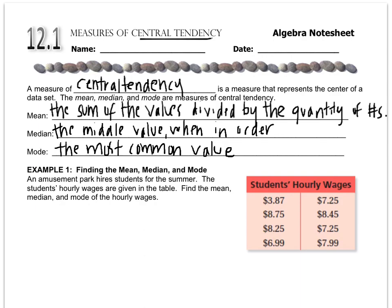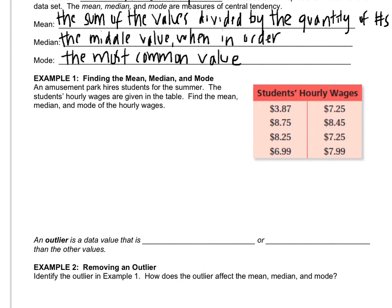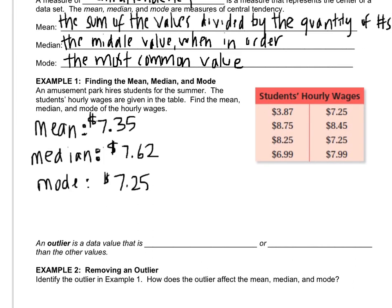So, I'd like you right now, pause the video, and example one, find me the mean, median, and mode of the hourly wages. The median is $7.62. That's not on the list, but because I had two values in the middle, I added them up and divided by two, and so the median was $7.62.